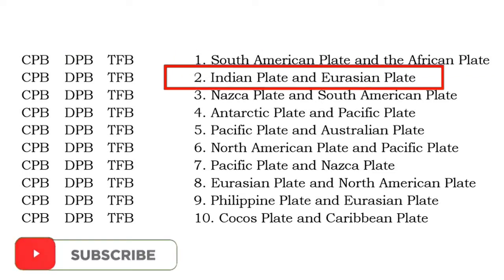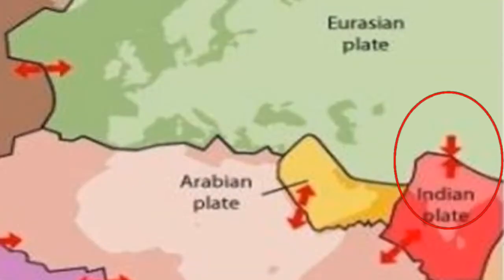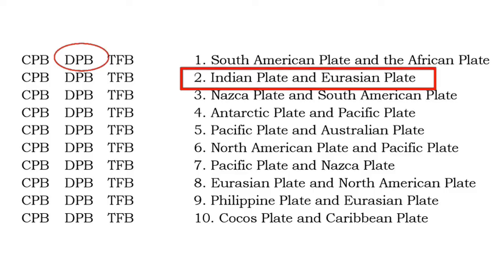How about in number 2, the Indian plate and Eurasian plate? Look at these arrows. The two arrows tend to move toward each other. This shows a convergent plate boundary. So, the answer in number 2 is CPB.